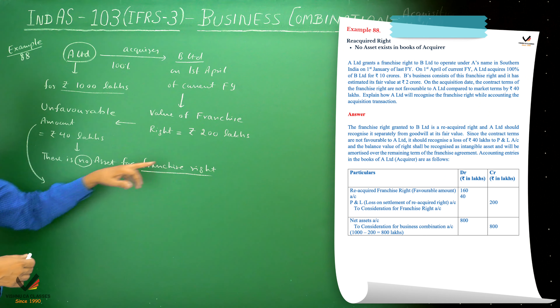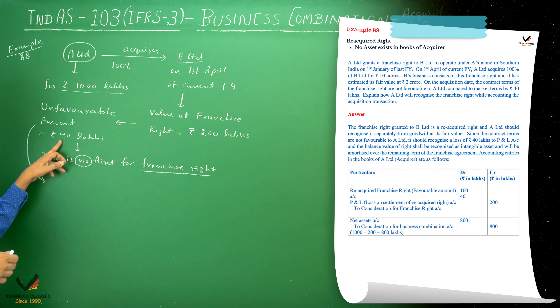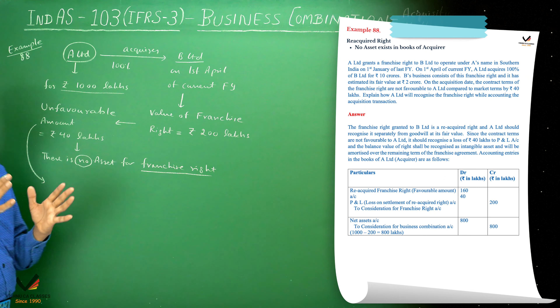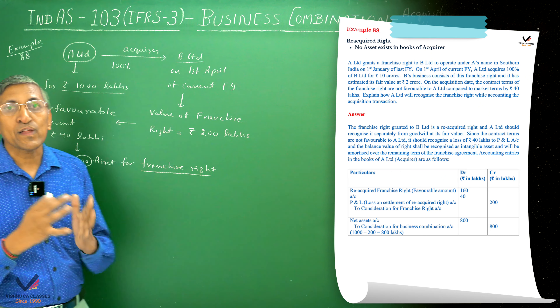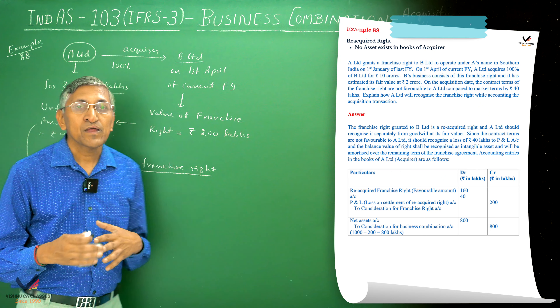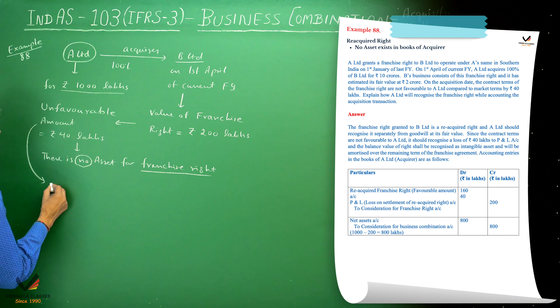The remaining component of the franchise right is 200 minus 40, which is the asset recognition amount. The entry for the unfavorable portion is the settlement loss.